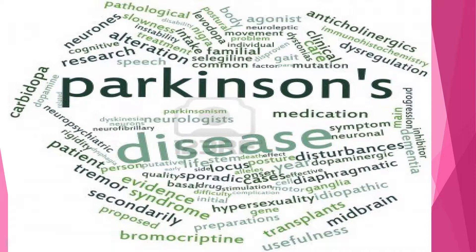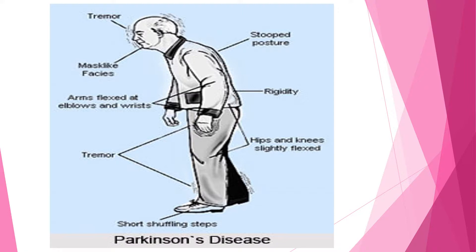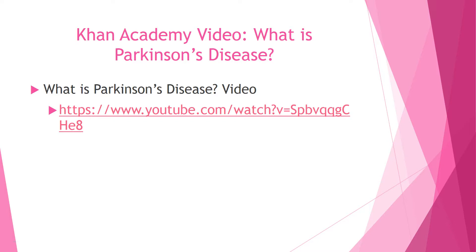The signs and symptoms include tremors in the early stages, mask-like facial expressions, arms flexed at the elbows and wrists, tremors throughout the body, stooped posture, rigidity and stiffness, and leaning forward at the hips with slightly bent knees. Patients are at greater risk for falls, especially due to their shuffling gait — they don't pick their feet up properly when walking.